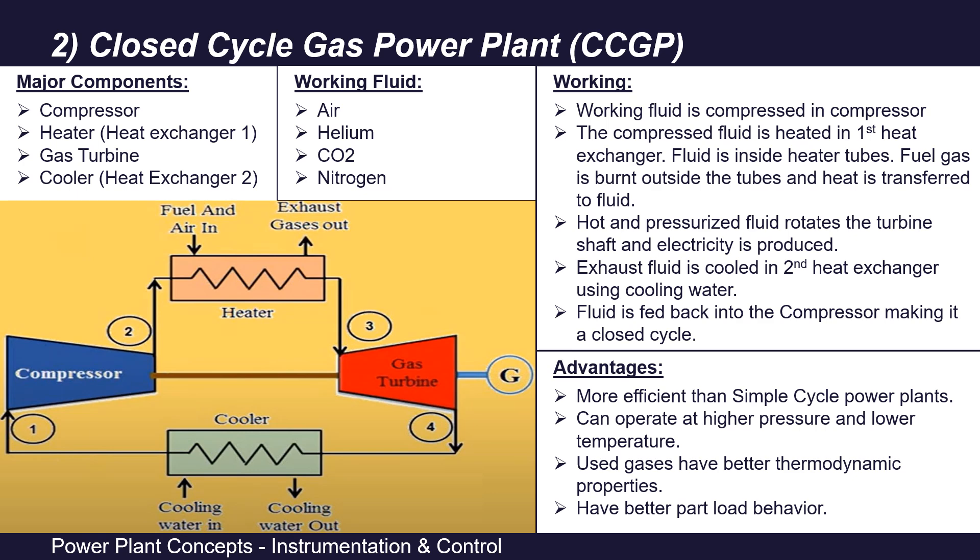The advantages of closed cycle power plants are that they are more efficient because they can operate at higher pressure and lower temperature, and the used gases have better thermodynamic properties. These power plants also have better part-load behavior.